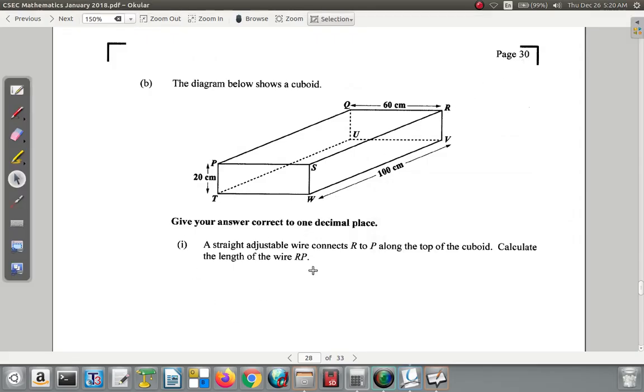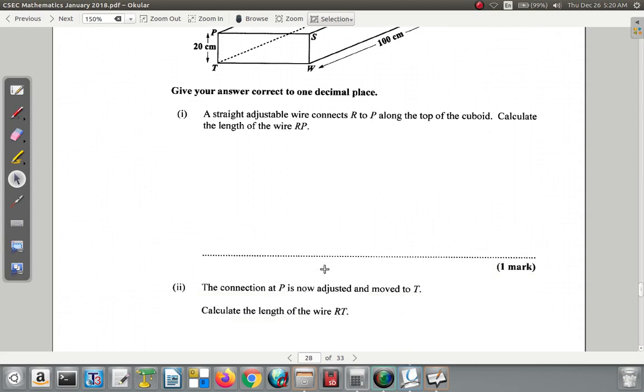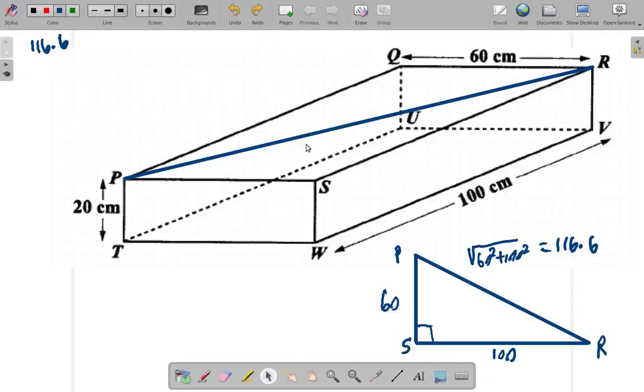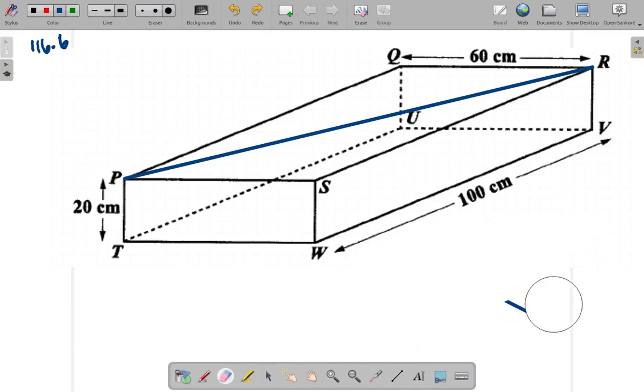Now what else did it ask for? It says the connection at P is now adjusted and moved to T. Calculate the length of the wire RT. So it's RT that we want now. Let's erase the rough work. RT, so we have the wire moved from R to T.